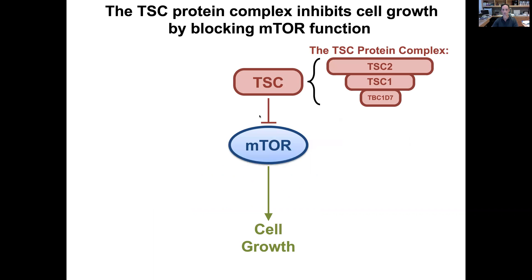The TSC mTOR pathway is pictured here in a very simplified version. The TSC protein complex, which is the protein complex that's disrupted in tuberous sclerosis, is comprised of these three proteins. Most commonly, TSC is caused by mutations in TSC1 or TSC2. This disruption of the TSC complex leads to activation of the mTOR protein, which drives cell growth and is really a master regulator of cell growth.